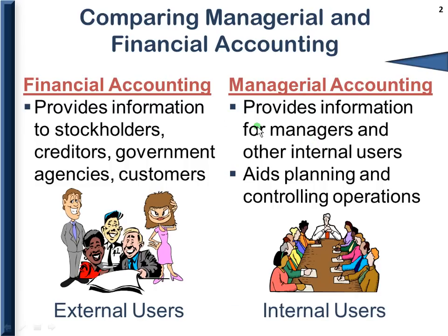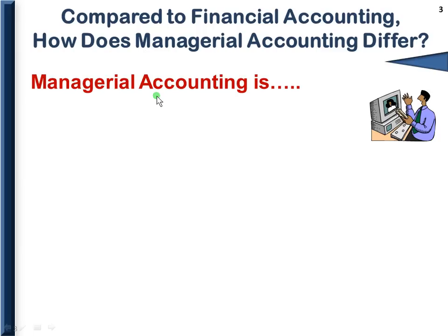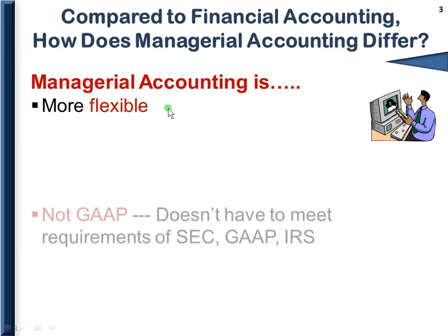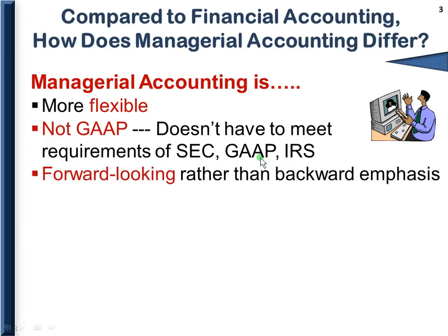Let's first compare financial to managerial accounting. Managerial accounting is a lot more flexible. There are no requirements to meet GAAP. It's used only internally and not given to outsiders, so you don't have to worry about the Securities and Exchange Commission, the Internal Revenue Service, or compliance with accounting principles. It's also forward-looking, meaning it's a planning tool for the future. Financial accounting was based on transactions that had already occurred.